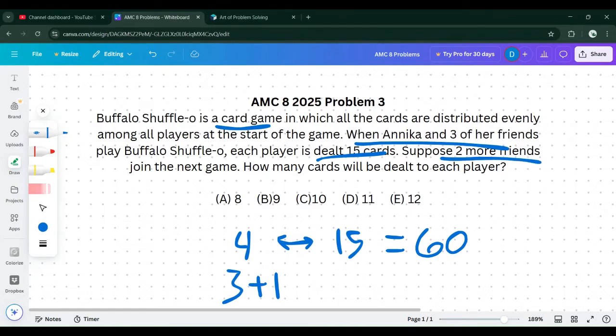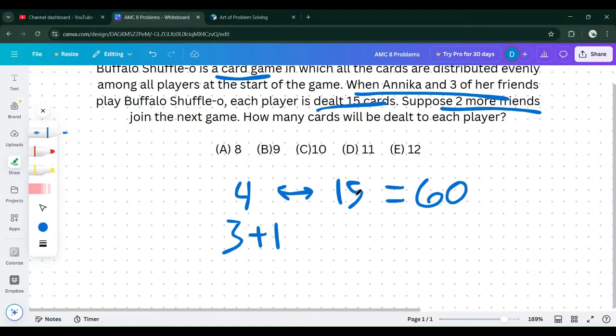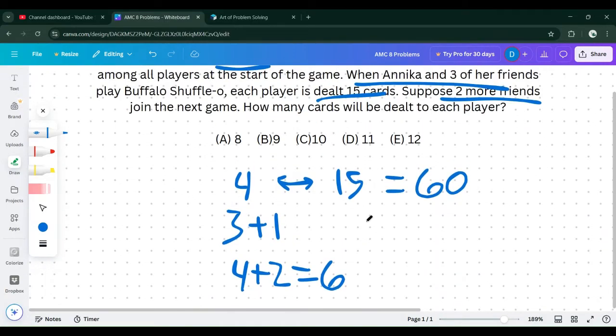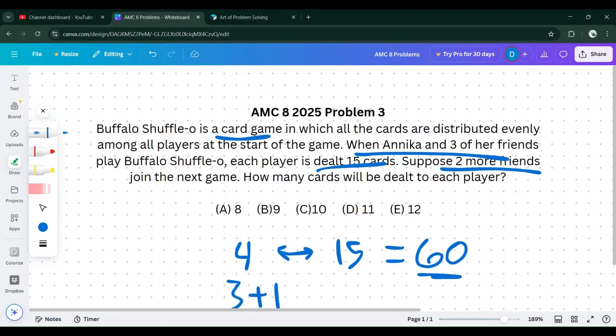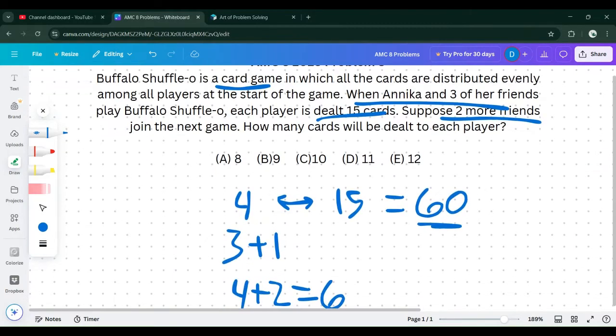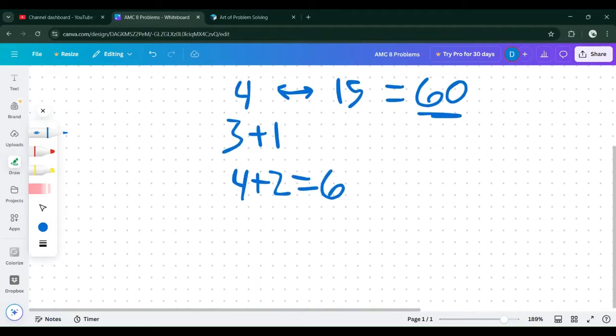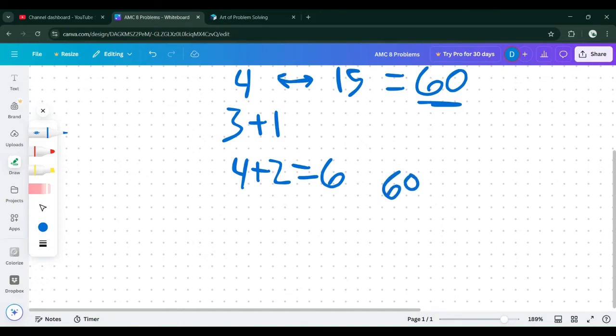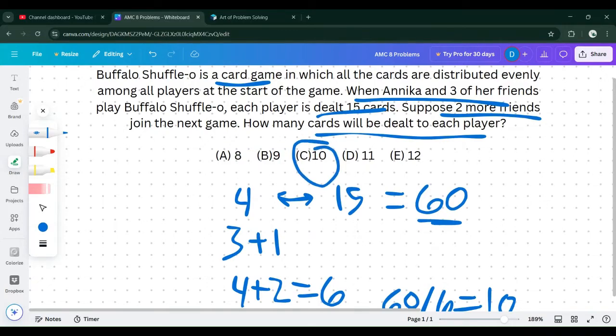Suppose two more friends join the next game, adding on to the four that are already there. There's six players in the next game and there's still 60 cards to deal. How many cards will be dealt to each player? Since there's 60 cards and six players, if we divide evenly, 60 divided by 6, there will be 10 cards given to each player. Making the answer C.